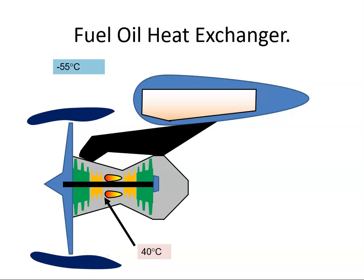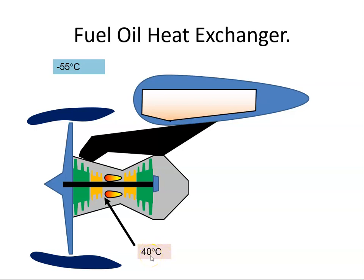When the aircraft is operating at altitude, the outside air temperature will be somewhere in the region of minus 55 degrees Celsius at an altitude of 36,000 to 37,000 feet. If the outside air temperature is minus 55, we can assume that the fuel is going to be quite cold also. When the fuel gets from the tank to the fuel nozzles, we need to increase the temperature of the fuel because the flash point of Jet A1 is around 40 degrees Celsius, so we need to try and increase the temperature towards that.